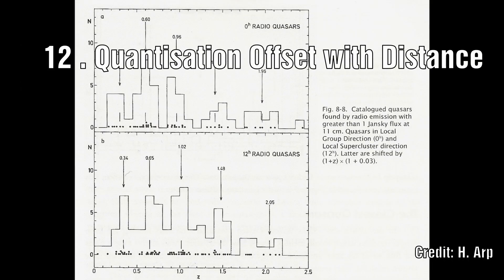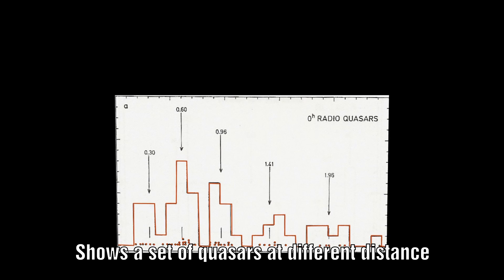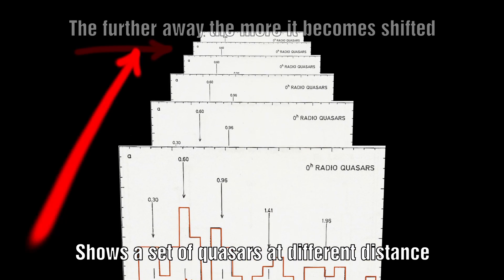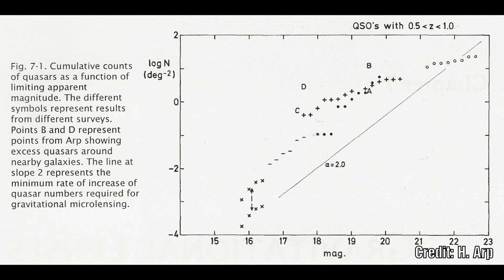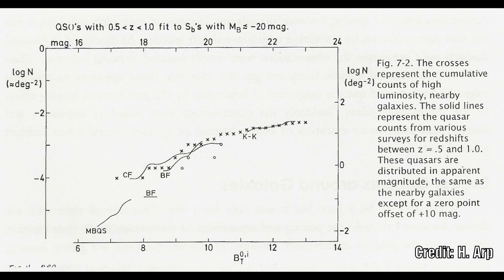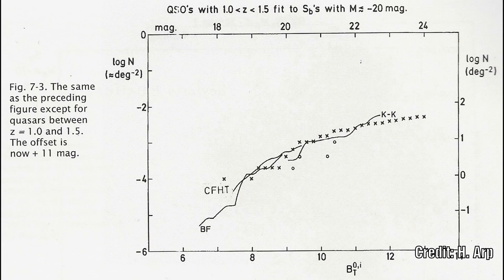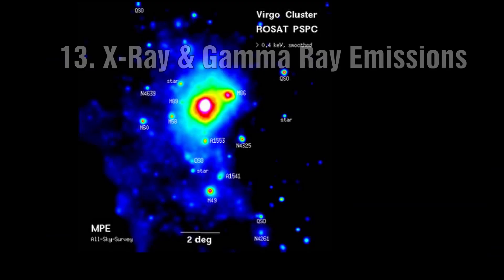Number 12: Arp also saw that there was an offset for this quantization which was related to distance. That's important because when you look at the whole catalogue, you don't see that clear quantization because it smears out due to distance. The big question is how we measure that distance. Arp compared the local cluster to the Virgo cluster, and in other work he indicates we could use apparent magnitude to start identifying that distance — something that needs further investigation.